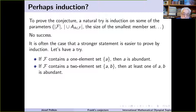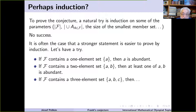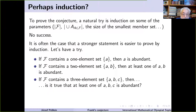Let's look at the case where F contains a two-element set {a, b}. Assuming it contains no one-element set (otherwise we're already done), I leave it to you as an easy exercise that at least one of the elements a or b is abundant. Next case: if F contains a three-element set {a, b, c}, is it true that one of a, b, c is abundant? Perhaps we are on a good track.